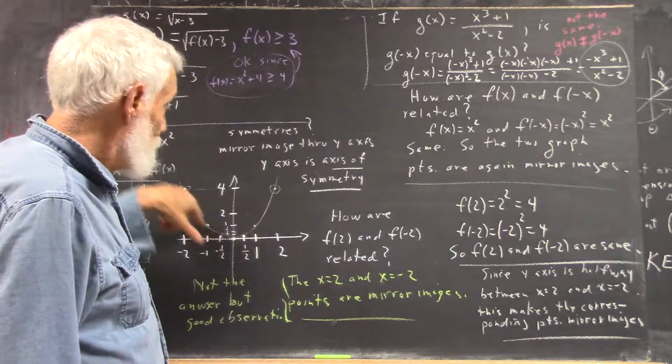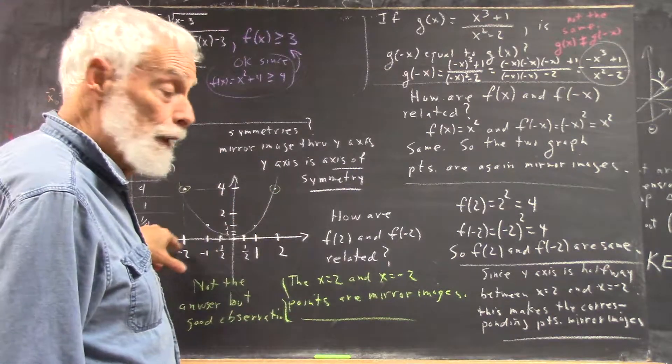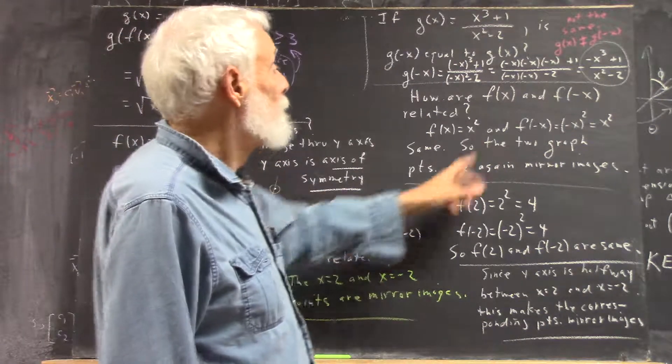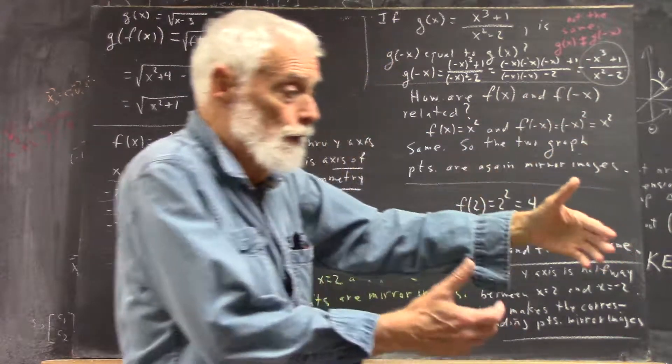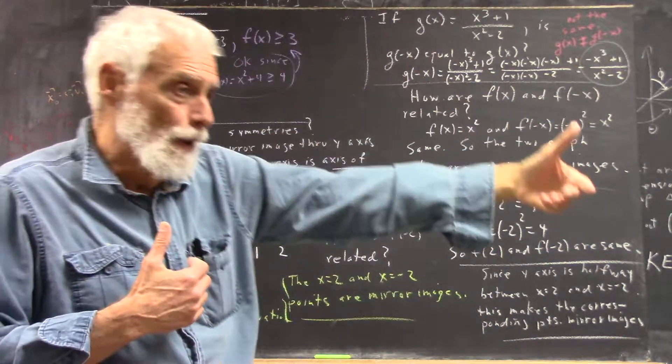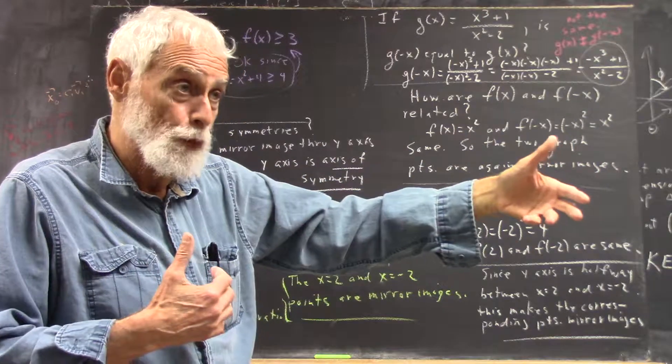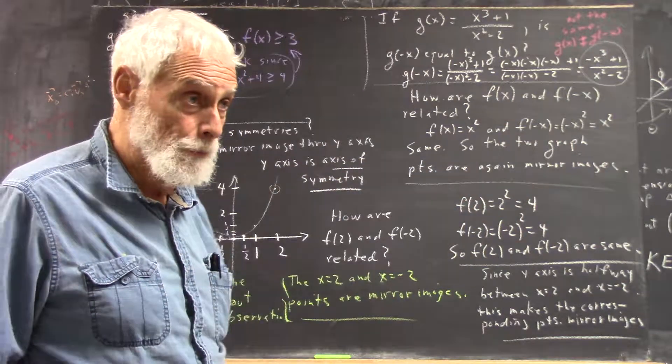You see that this is symmetric with respect to the y-axis because f of x is equal to f of negative x. Meaning, if you come over on this side, you get the same thing you do on this side of the y-axis at equal distances.